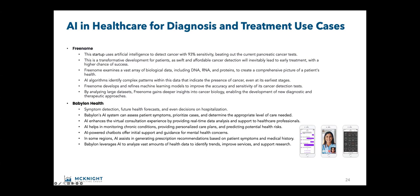Freenome says their funding gets us all closer to bringing out early cancer detection tests to everyone, ultimately saving lives. Having had cancer in my immediate family recently, I can appreciate this and see the potential for AI in healthcare in this area. There are all sorts of benefits: personalized medicine, tailored treatments based upon individual genetic makeup. Think about DNA as a data set — we're going to have to think about DNA as yet another data set.